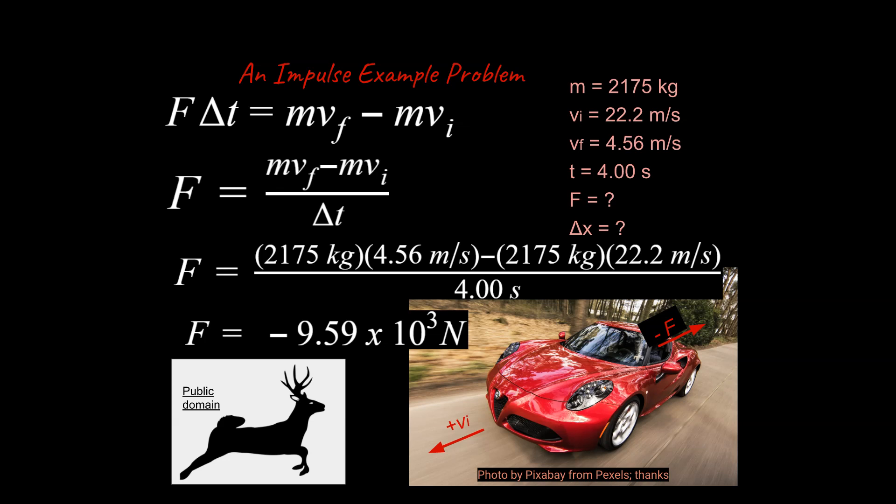You would have an acceleration in that direction and a force in that direction. We're talking about the force due to friction from the brakes and the friction from the tires on the road. All that's going to combine to have a backwards force that slows the car down.